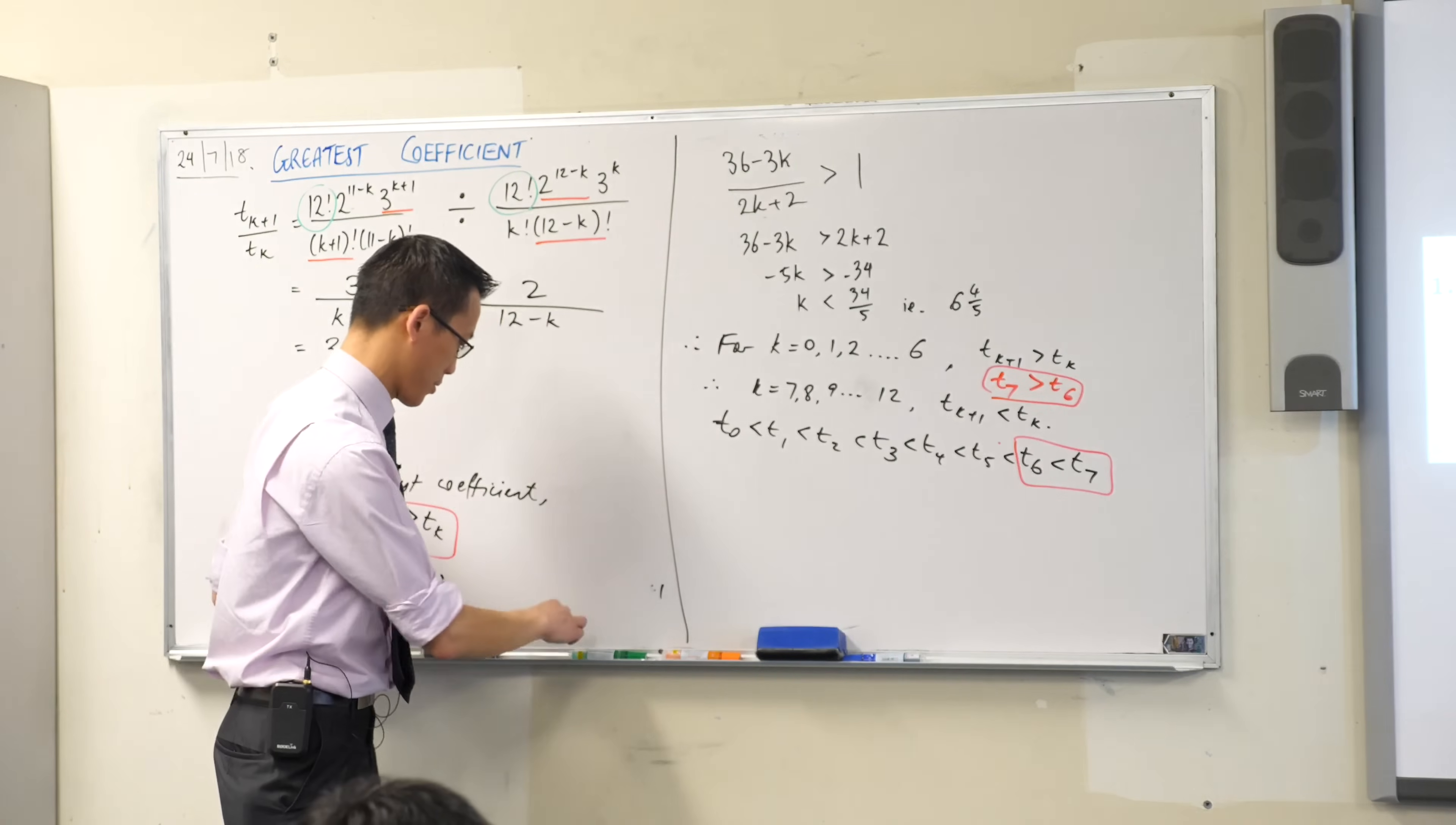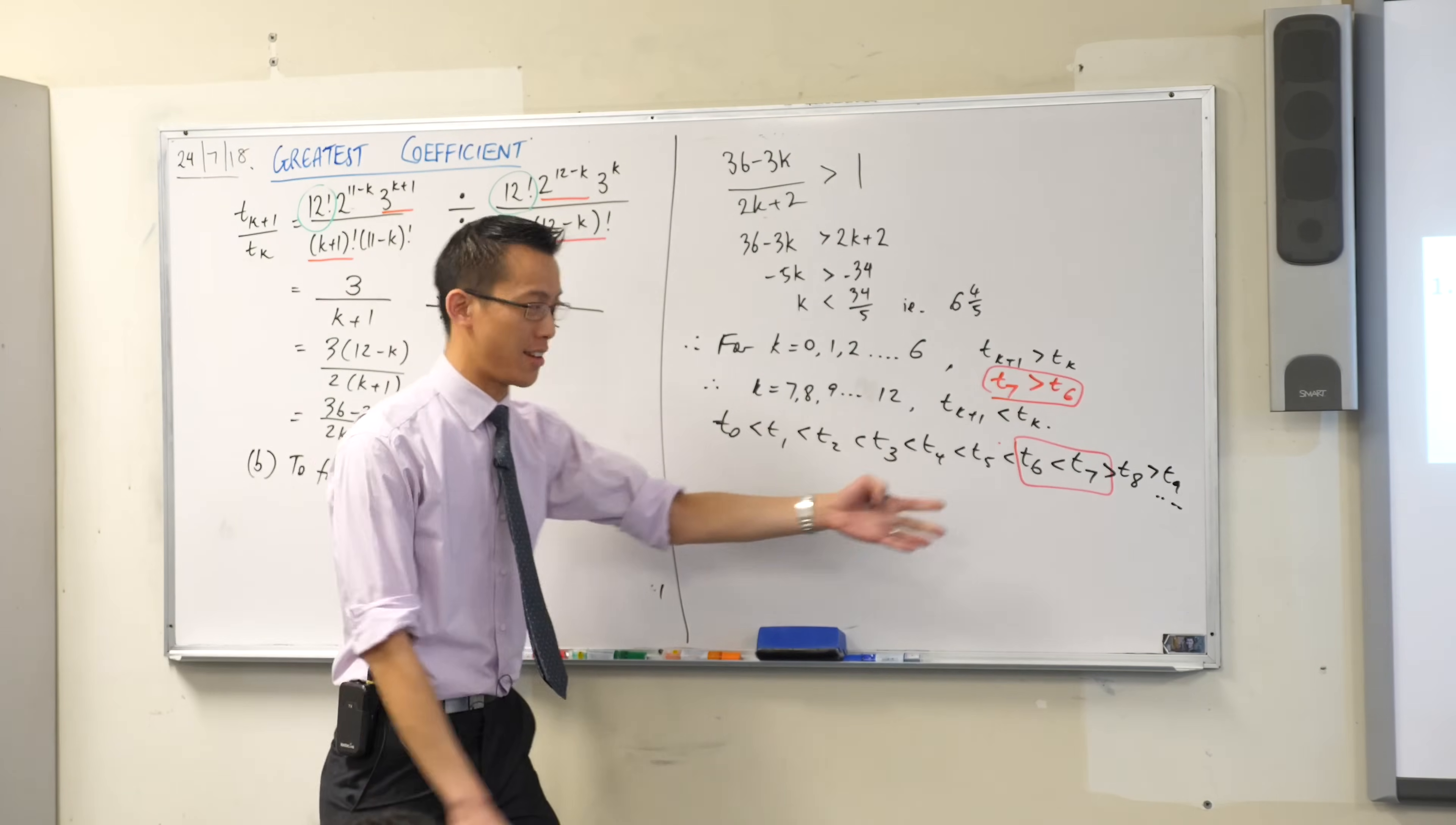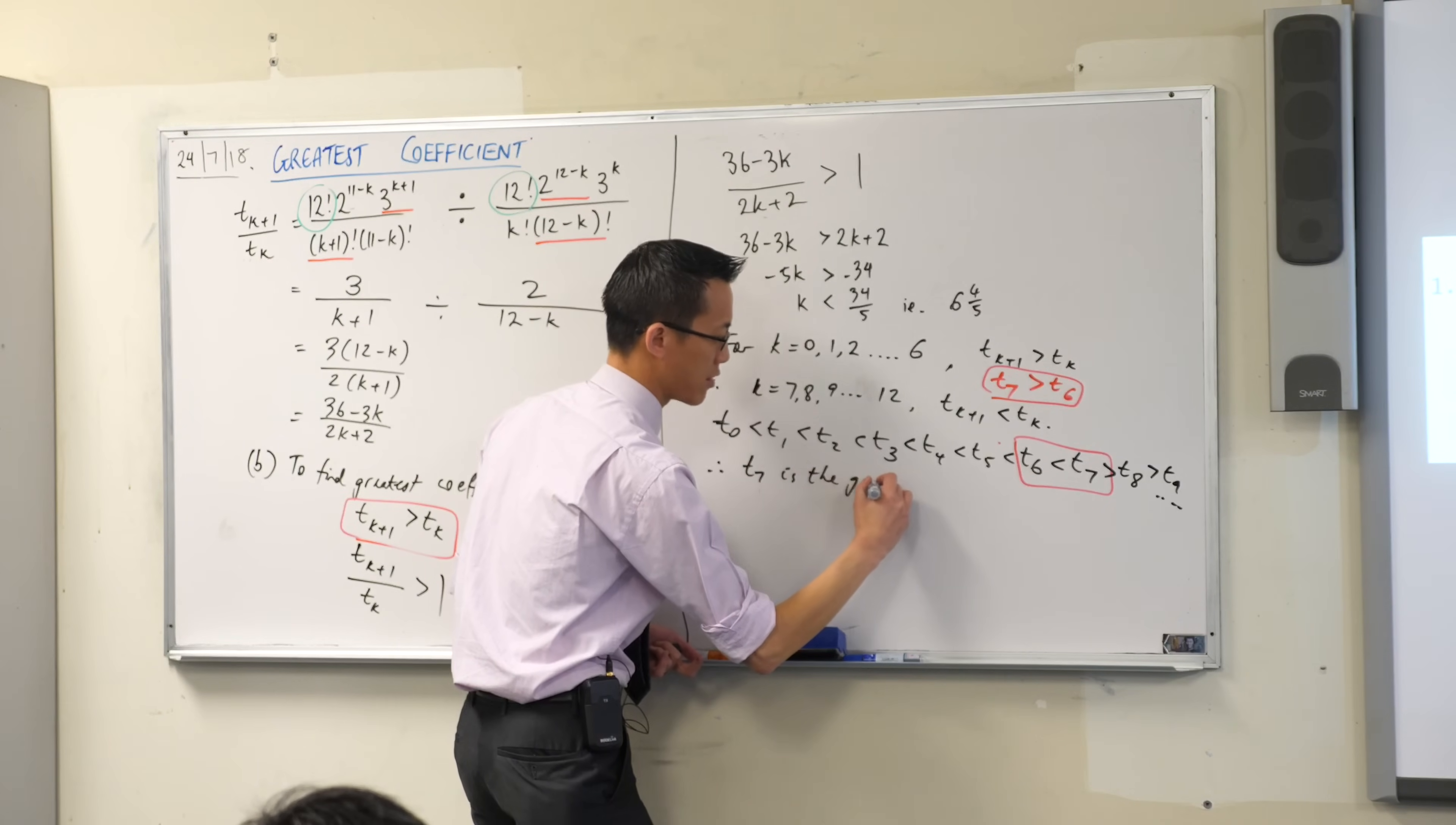But afterwards, the inequality is no longer true. So T7 is as big as it gets. T8 will be smaller and T9 will be smaller and so on. It will continue, okay? So I have just established here through this logic that T7 must be the biggest of the T's, the biggest of the coefficients. So I can say right here, I can conclude, therefore, T7 is the greatest coefficient.